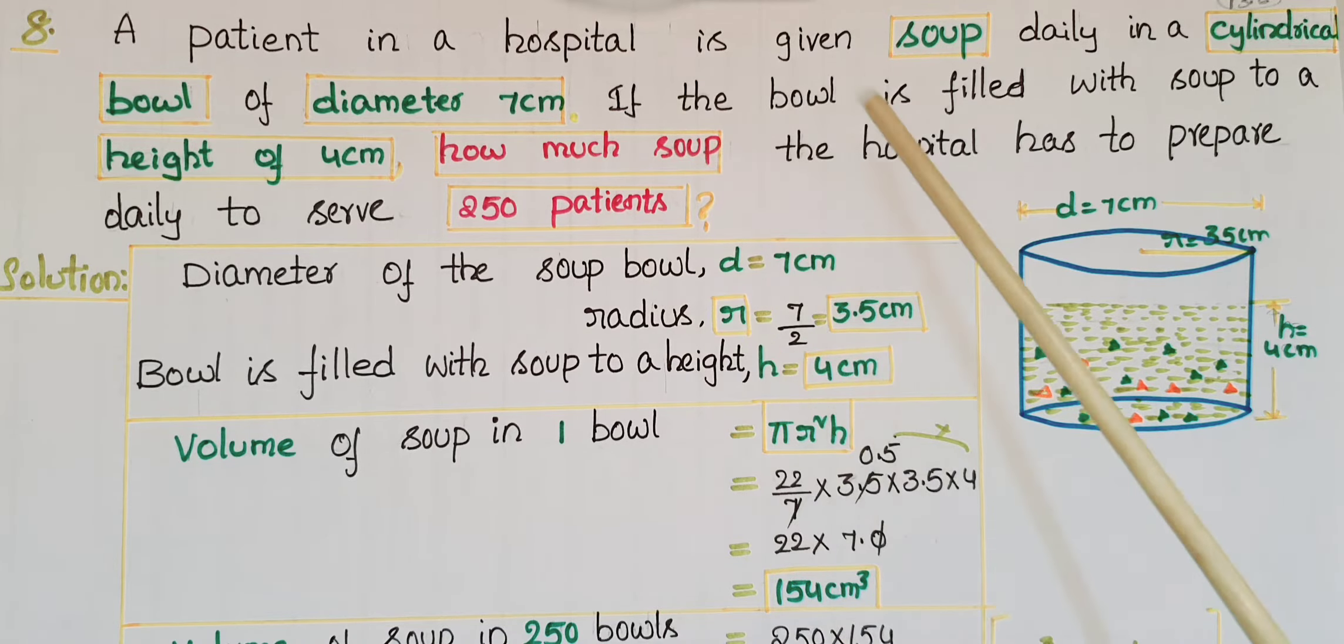So here the soup is given to the patients in a cylindrical bowl daily. The diameter of the soup bowl is given, that is 7 centimeters, and radius r is equal to diameter by 2, so 7 by 2, that is equal to 3.5 centimeters.